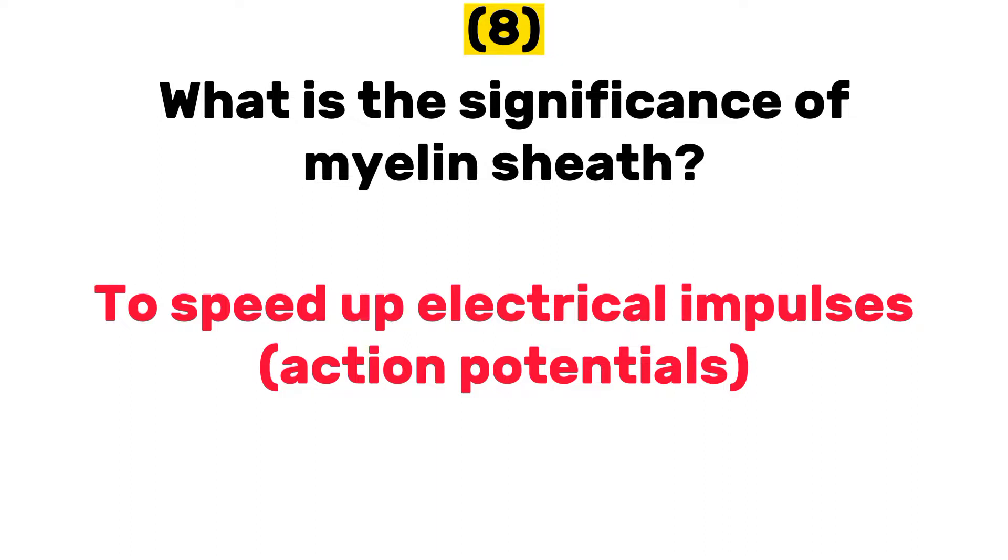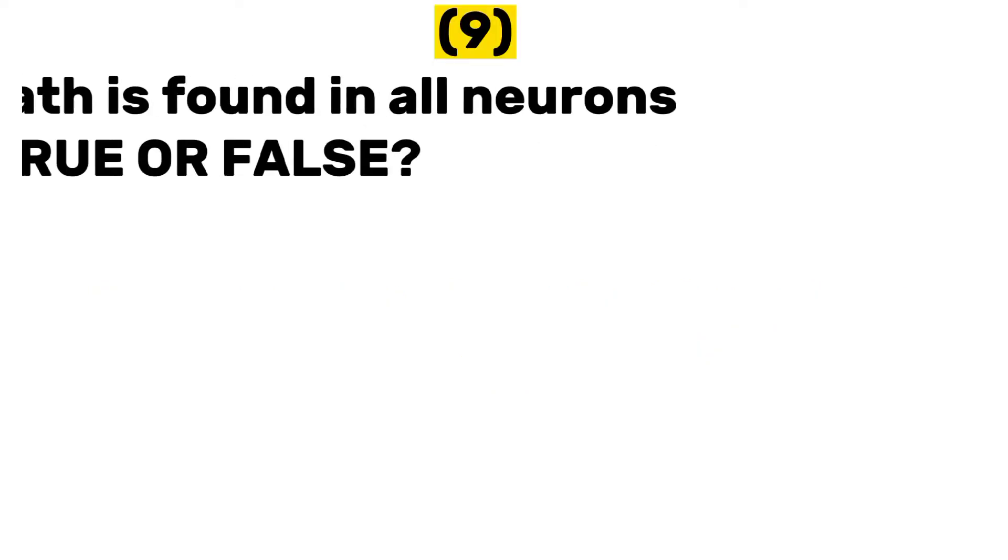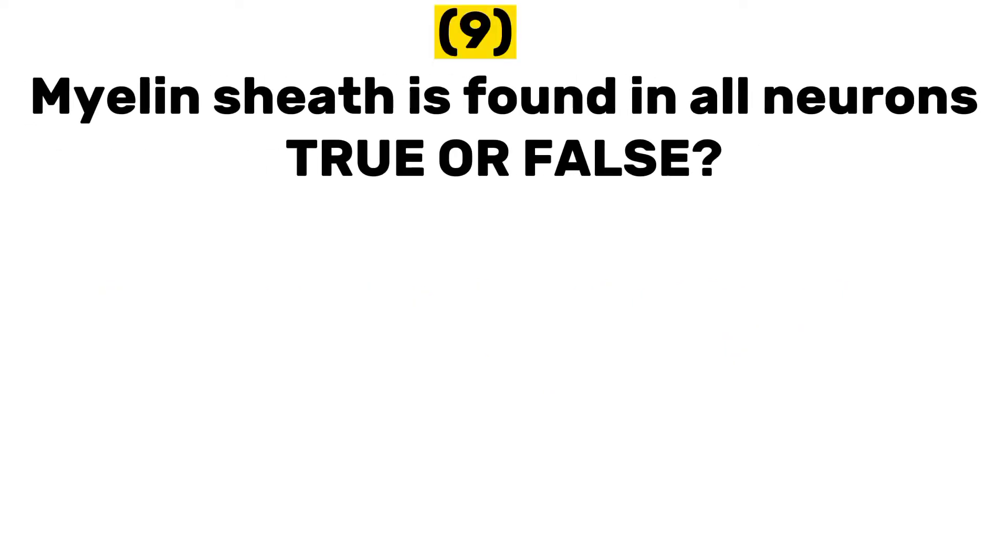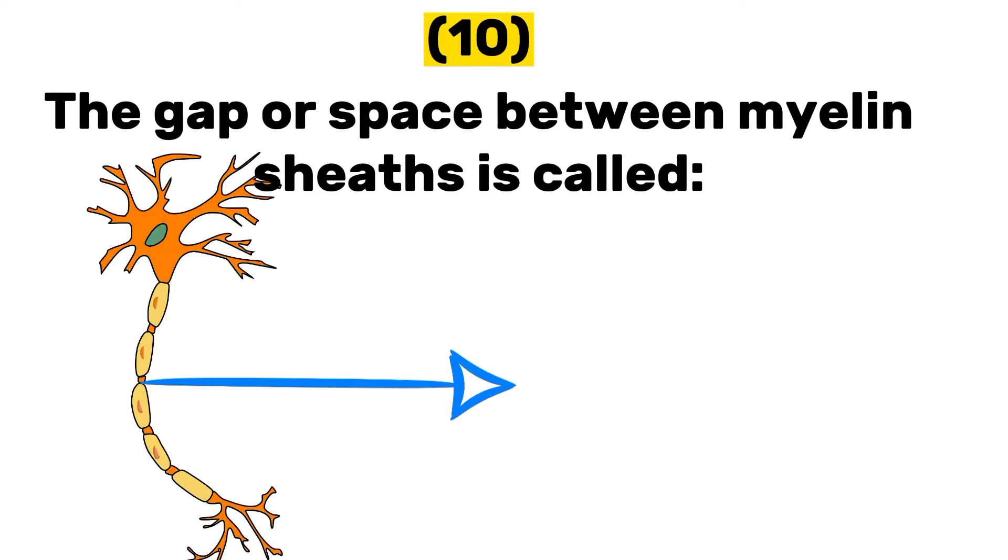Number nine: myelin sheaths is found in all neurons, true or false? False. So some neurons, especially in the peripheral nervous system, lack myelin sheaths. They are unmyelinated. Number ten: the gap or space between myelin sheaths is called?